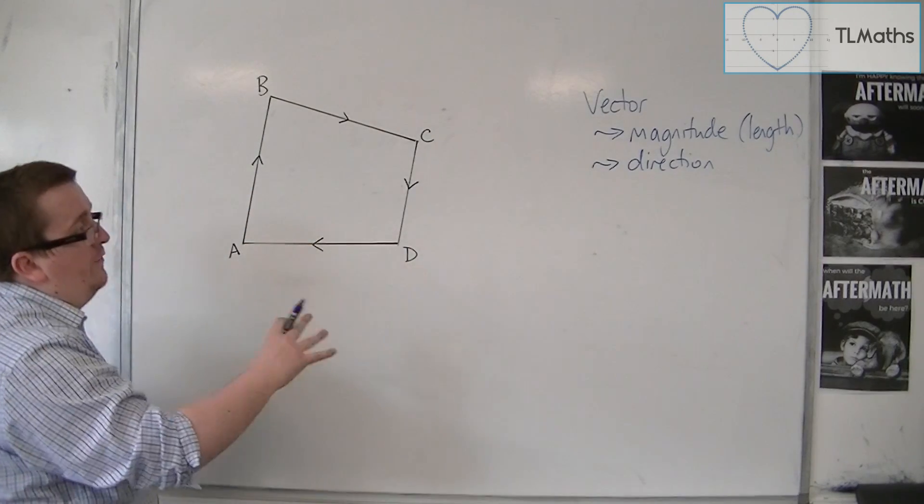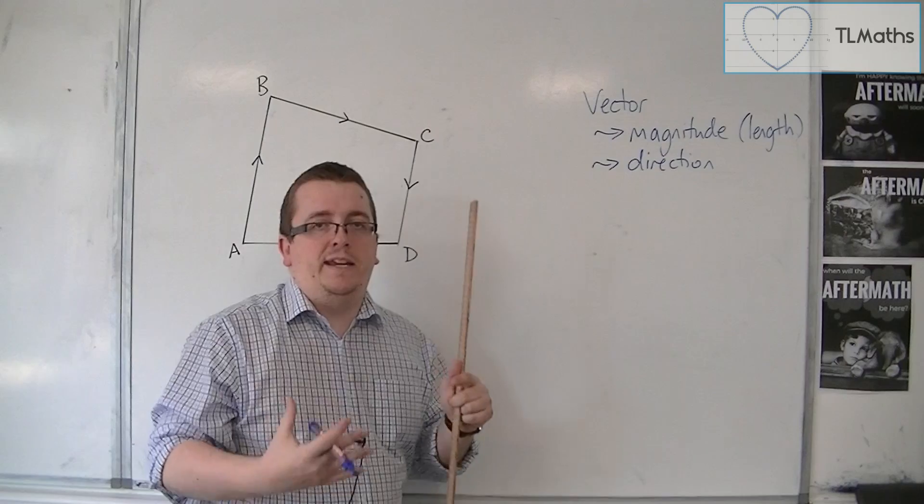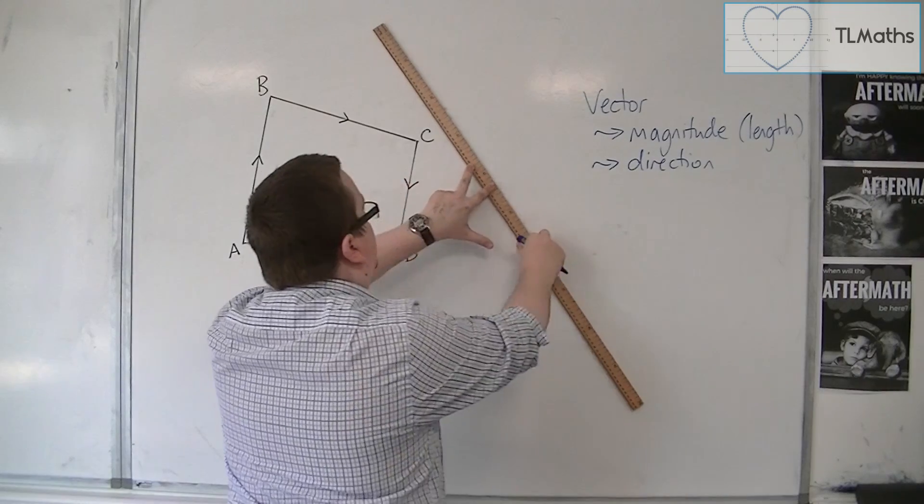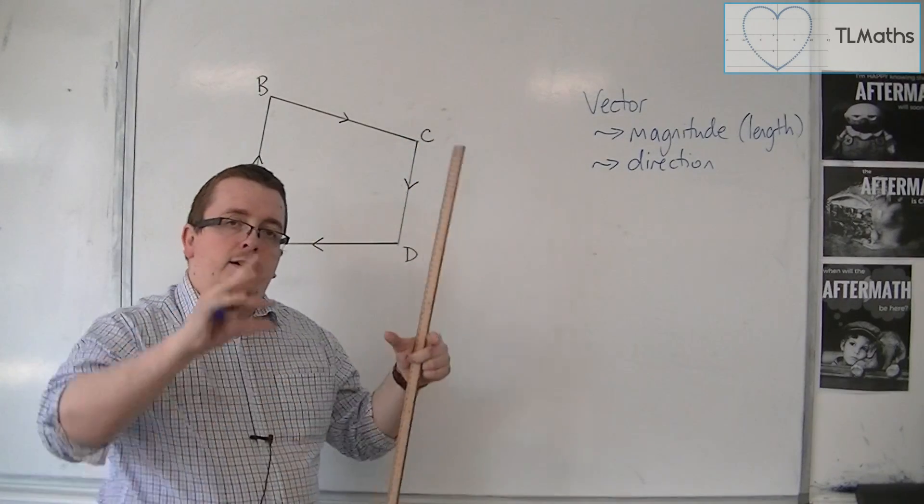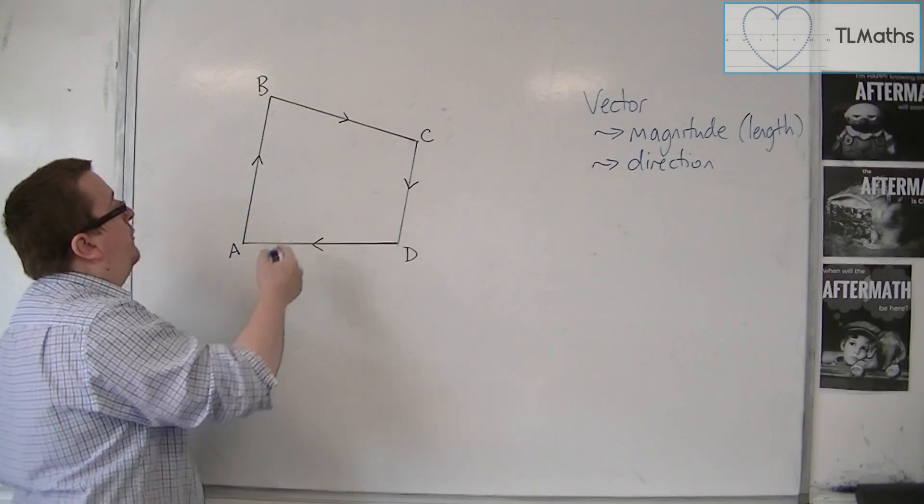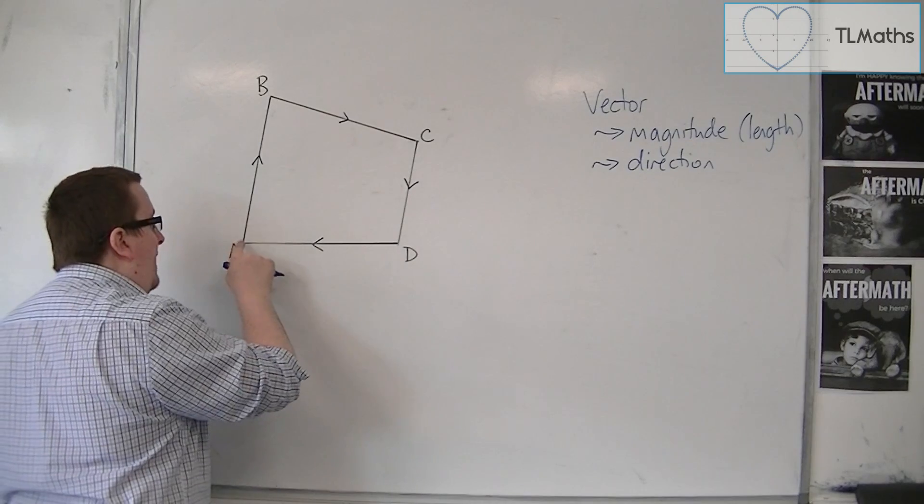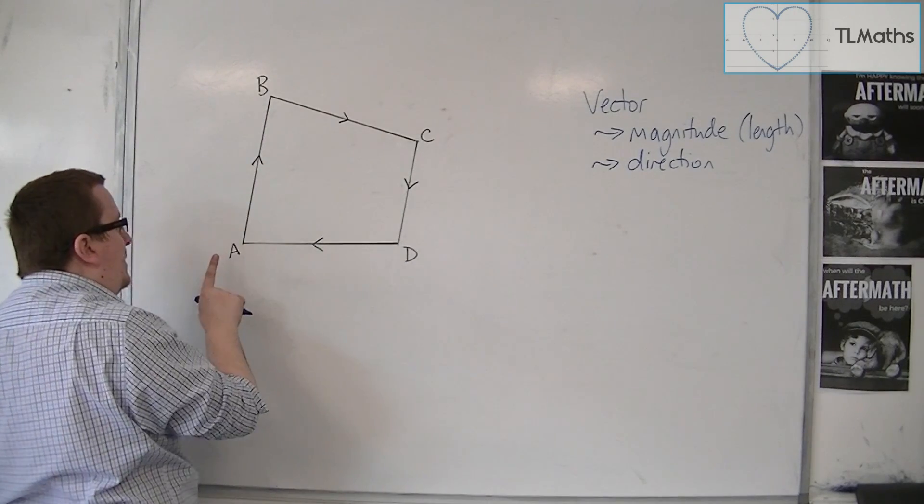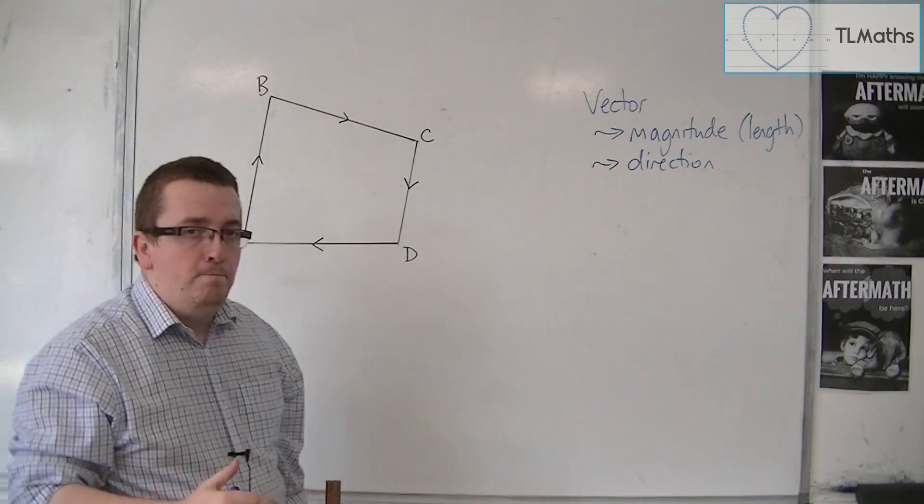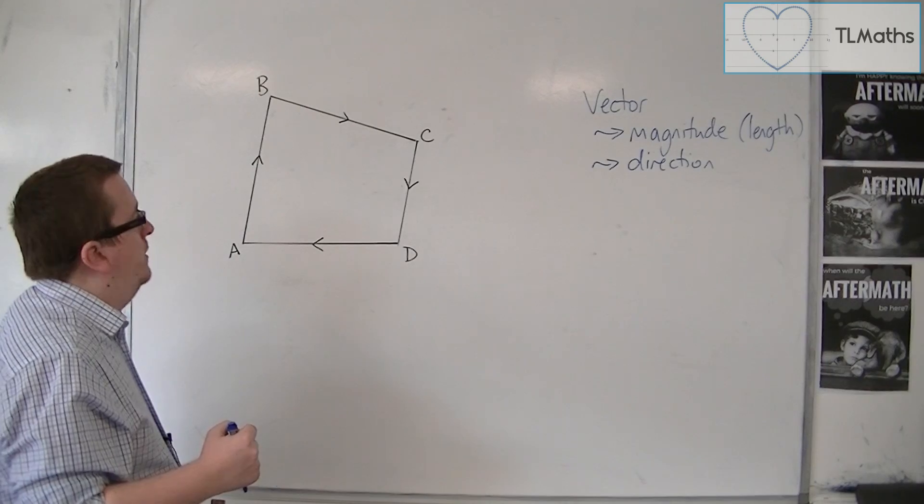Now with the direction, if I just draw any old line, it's not going in any particular direction because it could be going that way or that way. But a vector has a direction attributed to it, and that is why we put these arrows on the lines. So it's telling me that this vector going from A to B is going in that direction, not the other direction. So the vector has these two bits of important information attributed to it.